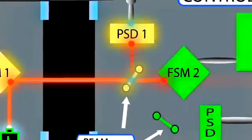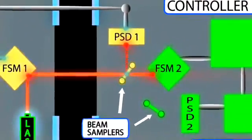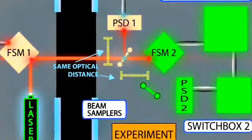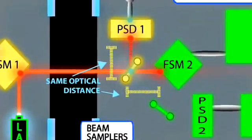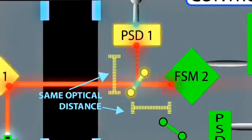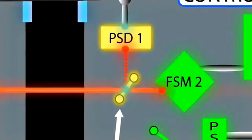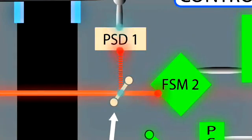The majority of the beam passes onto the surface of fast steering mirror two, which is positioned such that its surface is the same optical distance from the beam sampler as position sensing detector one. With this configuration, a beam that is stable on position sensing detector one will also be stable on the surface of the second fast steering mirror.